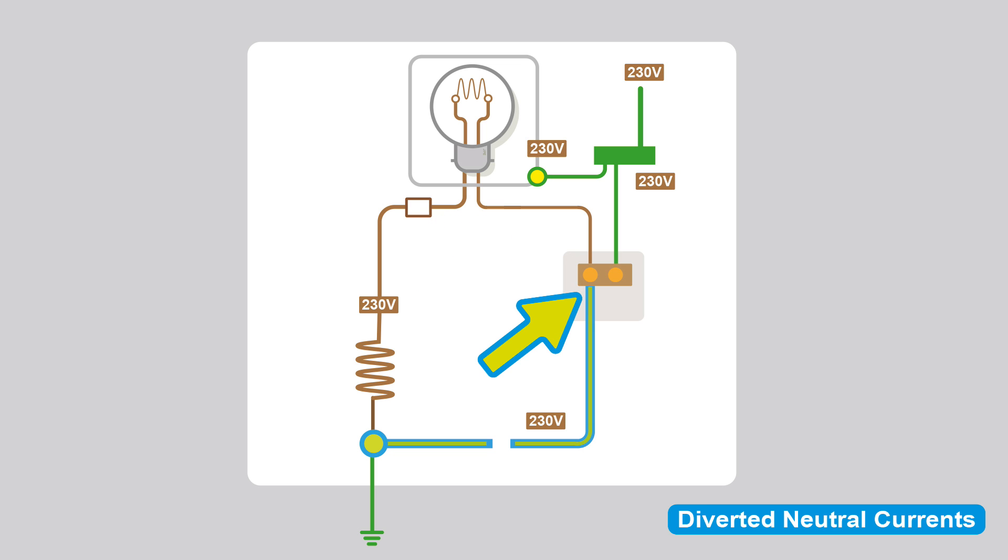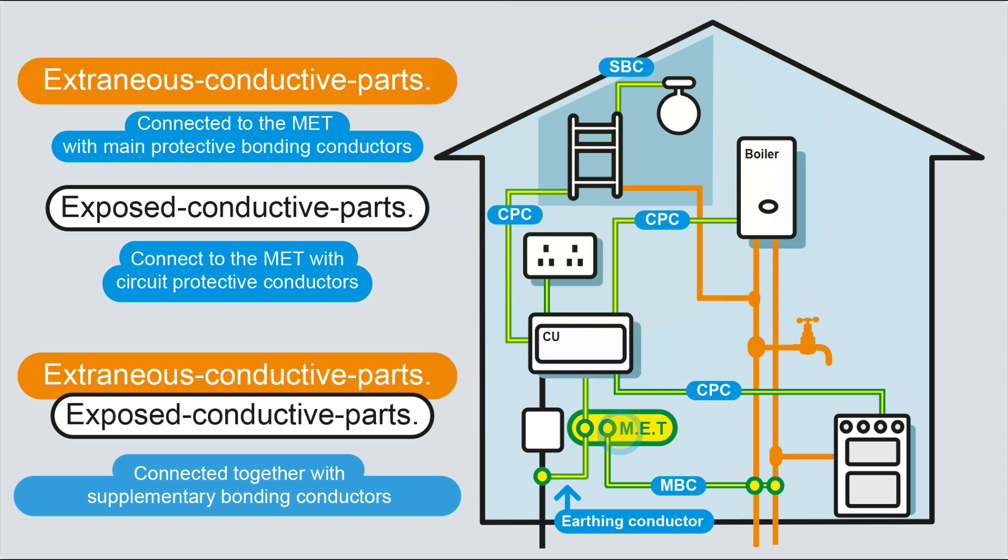So we're going down what used to be the neutral, back to the service head, where it was separated. But this time it's got another path. It's going to follow this path onto the MET, and once it gets to the MET, it's going to go to everything that's connected to that, which is basically everything, isn't it? It's going to go to all your exposed conductive parts, all your extraneous conductive parts.